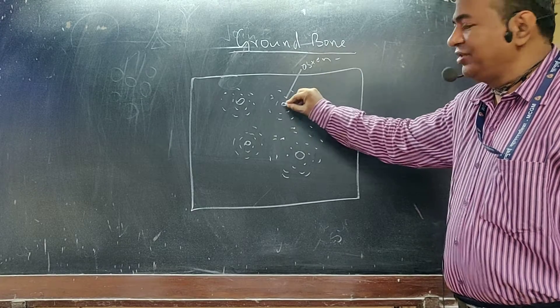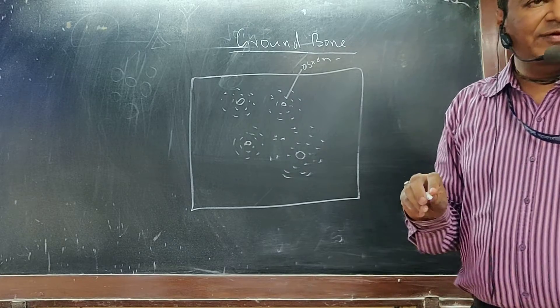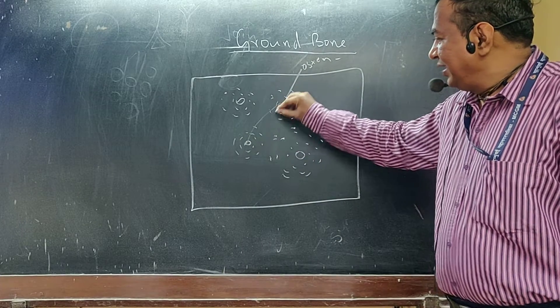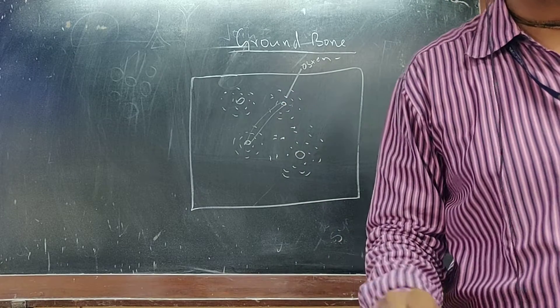A Haversian canal with concentric lamellae. Connecting to a Haversian canal, you may see a canal. What is that canal? Volkmann's canal.